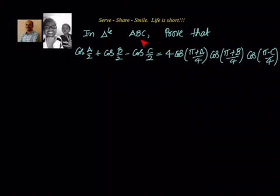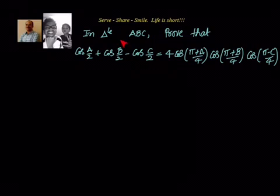In triangle ABC, prove that cos A/2 plus cos B/2 minus cos C/2 equals 4 cos((π + A)/4) · cos((π + B)/4) · cos((π − C)/4).